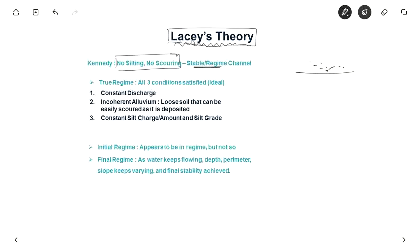But Lacey differed in his theory. What he said was true regime, that is true stable channel, can be achieved only if these three conditions are satisfied. One is there should be a constant discharge. And another is the bed and the banks of the river should contain incoherent alluvium which means loose soil that can be easily scored. The soil is very loose that it can be easily eroded and it can be easily deposited as well.